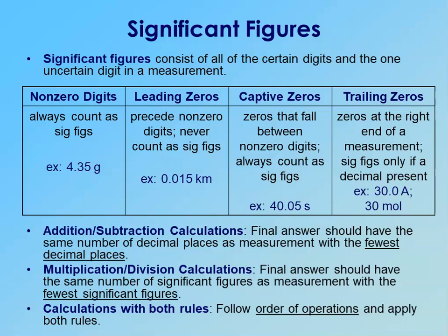Something not mentioned in the PowerPoint but worth touching on: exact numbers. Significant figures only apply to something you can measure, while exact numbers don't require a measuring device. They're ones you can count, or ones that are defined, like 60 seconds in a minute. Those do not have sig figs — they are considered to have an unlimited number of significant figures and should never impact your calculations with significant figures.